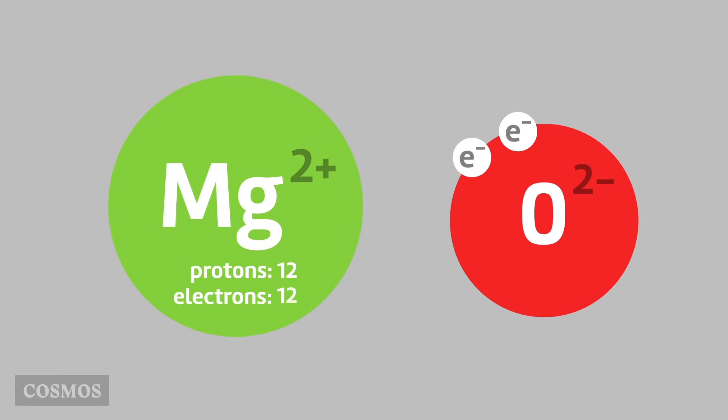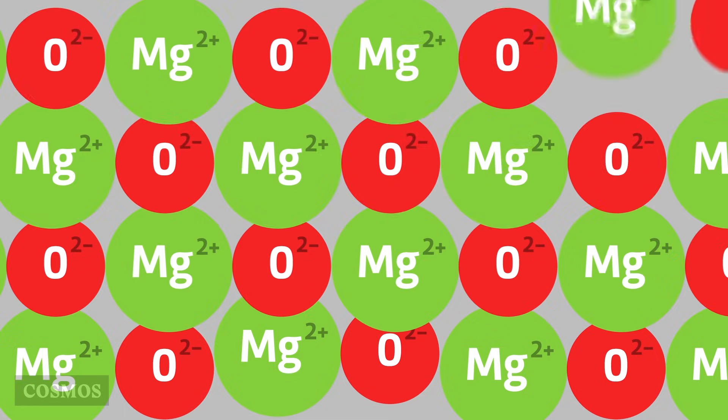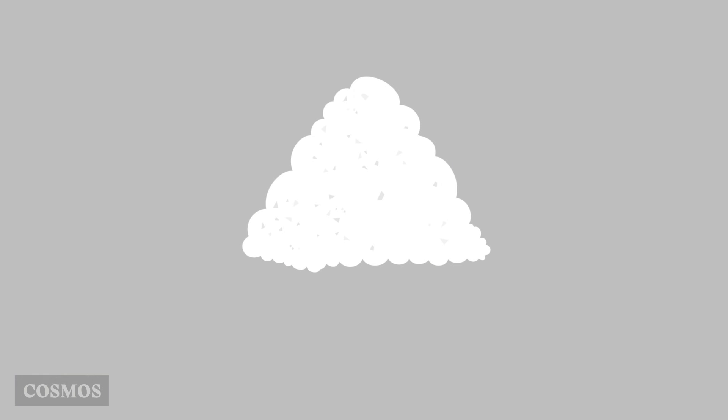The magnesium ions have an electrical charge of plus 2, because they've lost two electrons, and the oxide ions have a charge of minus 2, because they've gained two electrons. Positive and negative charges attract, so the ions bond to form a lattice. This is magnesium oxide, a white powder.